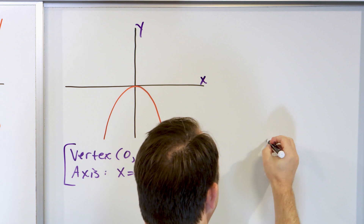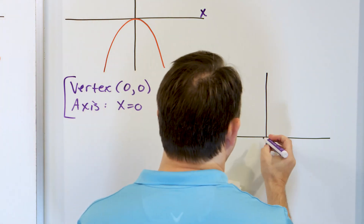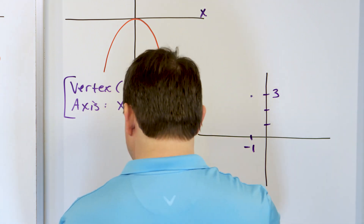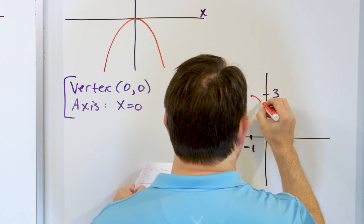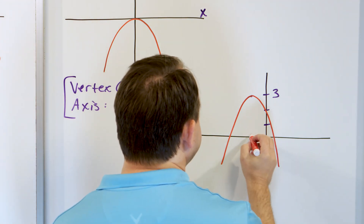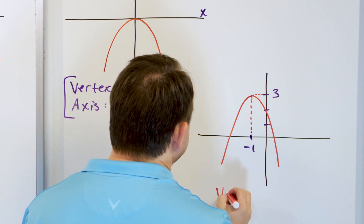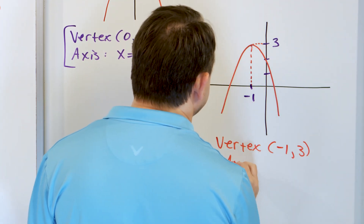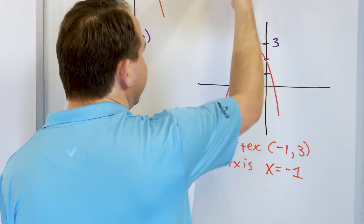Let's do one more. What if we had an upside-down parabola with its peak at (-1, 3)? The parabola opens downward from that point. The vertex is the highest point — negative one comma three — and the axis of symmetry is the vertical line that bisects the parabola, which is x is equal to negative one.